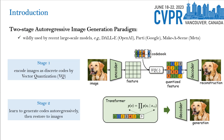Existing VQ-based autoregressive models follow a two-stage learning paradigm. The first stage learns a codebook to encode image regions into discrete codes. The second stage learns to generate codes autoregressively, which are then restored to images.